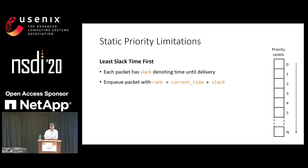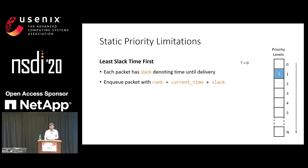To make it clear, let me show an example of least slack time scheduling, where each packet has a slack value that denotes the time available until its desired delivery. At any point in time, we want to dequeue the packet with the smallest slack. To achieve this in a static priority mechanism, you enqueue a packet with a rank equal to current time plus slack. So if a packet at time T0 comes with slack one, you enqueue it with rank one; time T1 with slack two, you enqueue it with priority three, and so on.